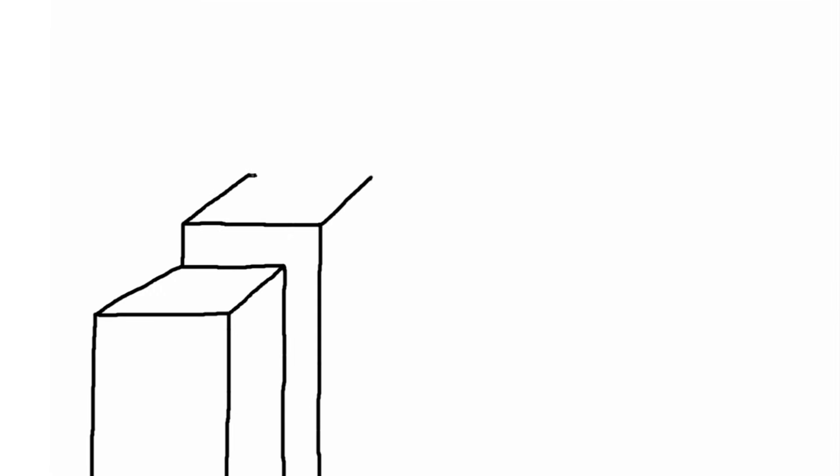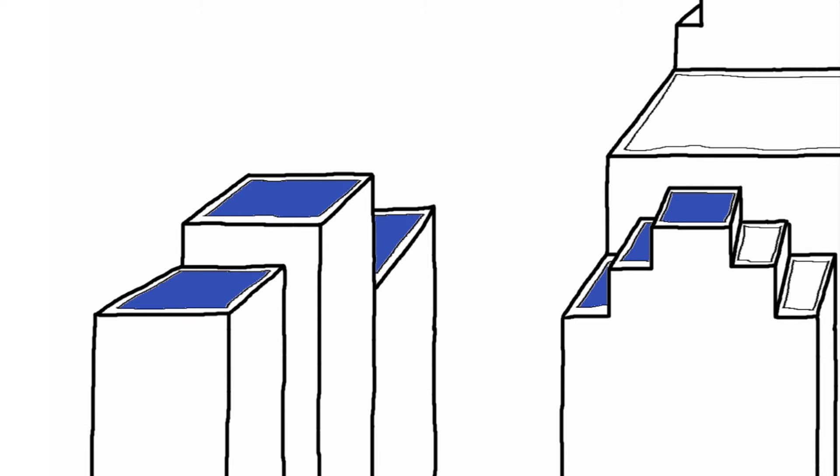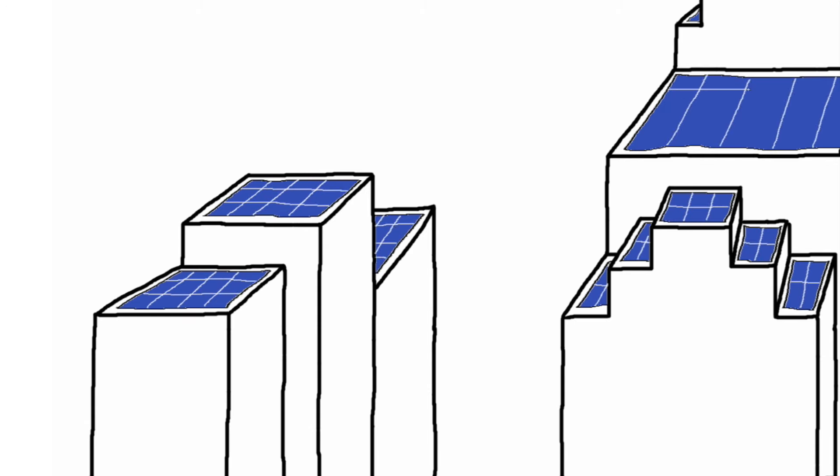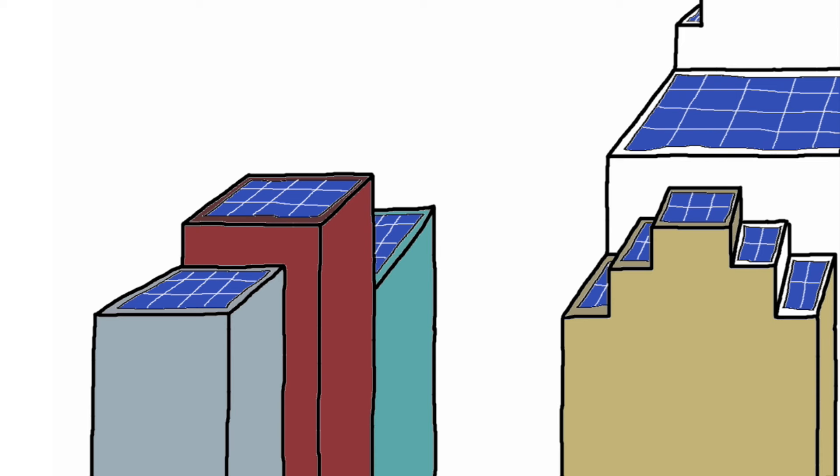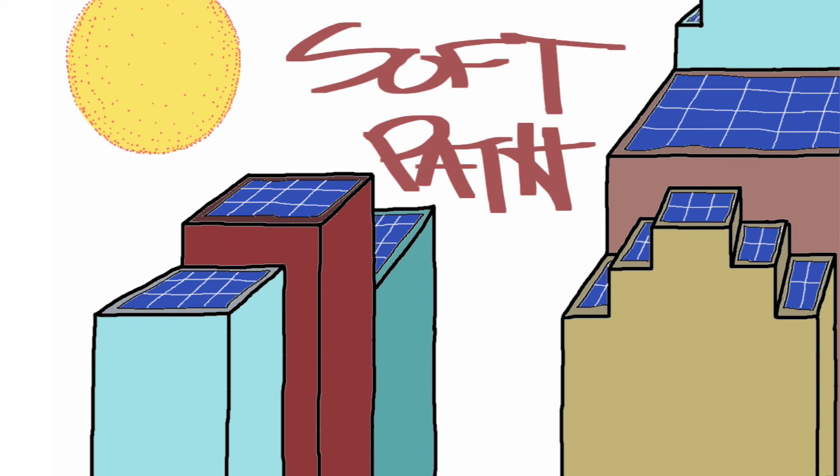In addition to massively reducing carbon emissions, these sources have the capacity for reintegrating power generation into city life, creating a decentralized, space-efficient, and more robust system less susceptible to massive blackouts. Such a model is called a soft path grid system.